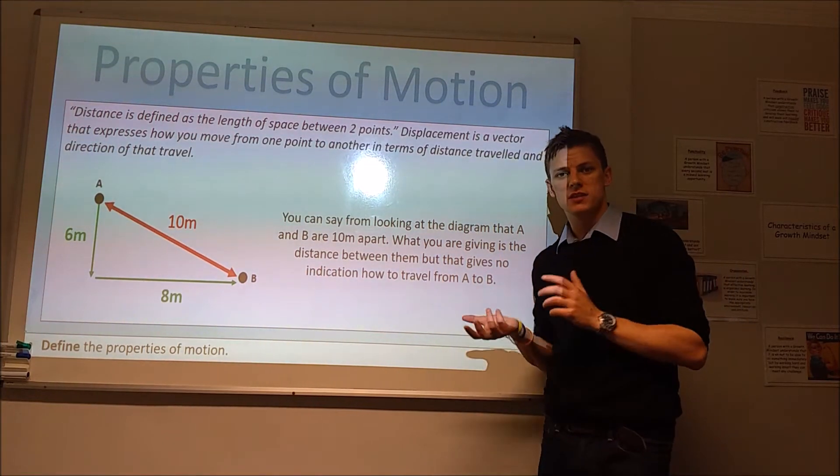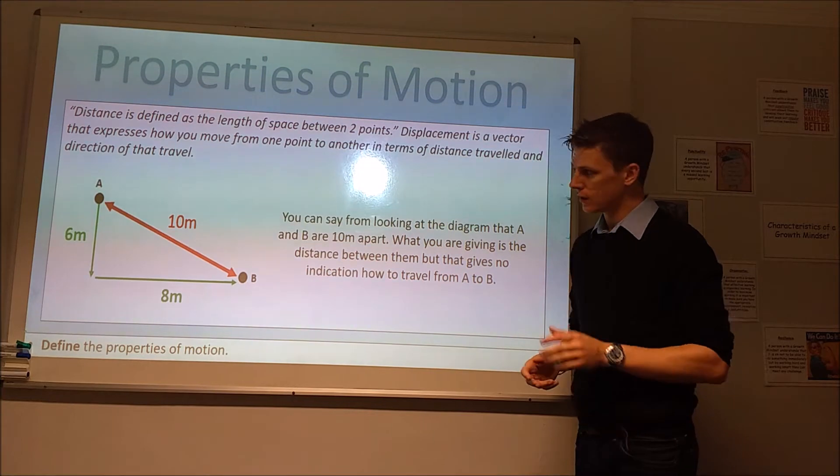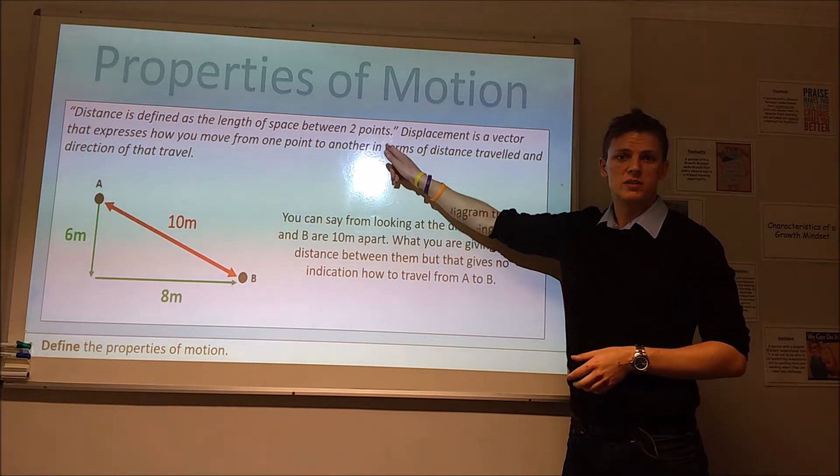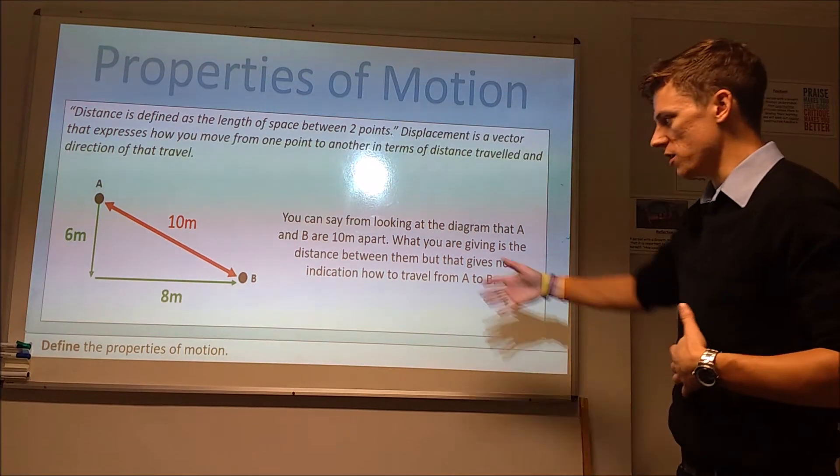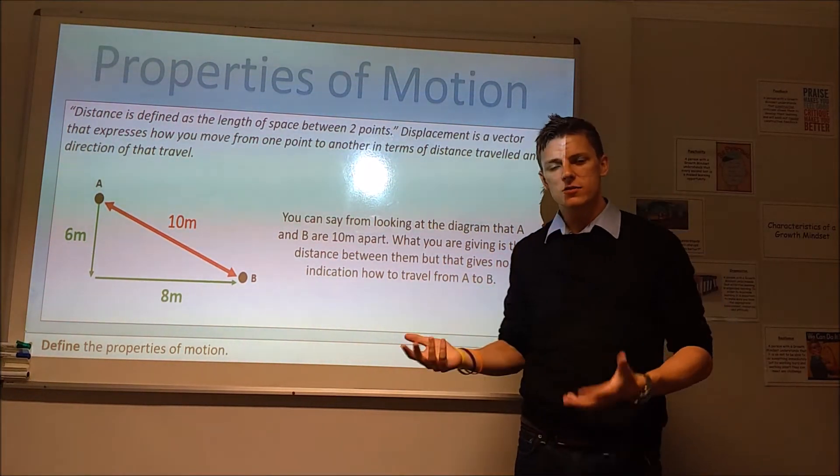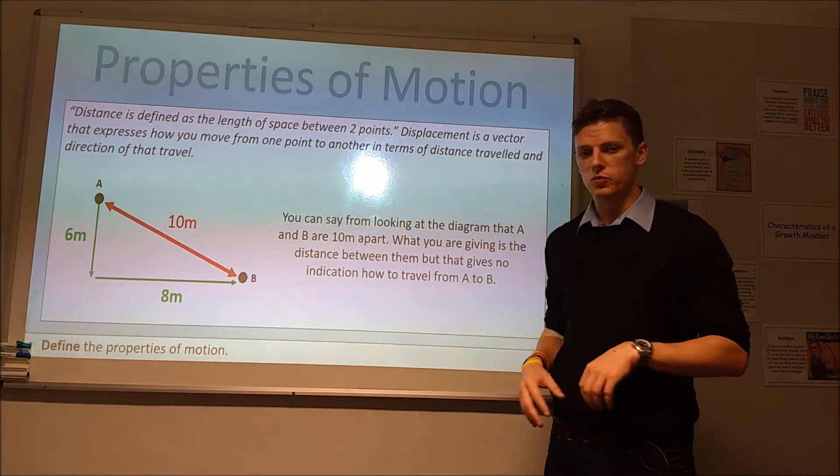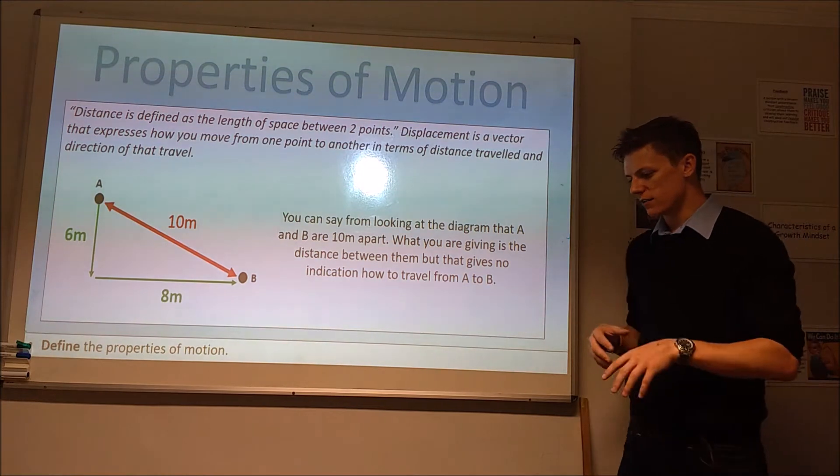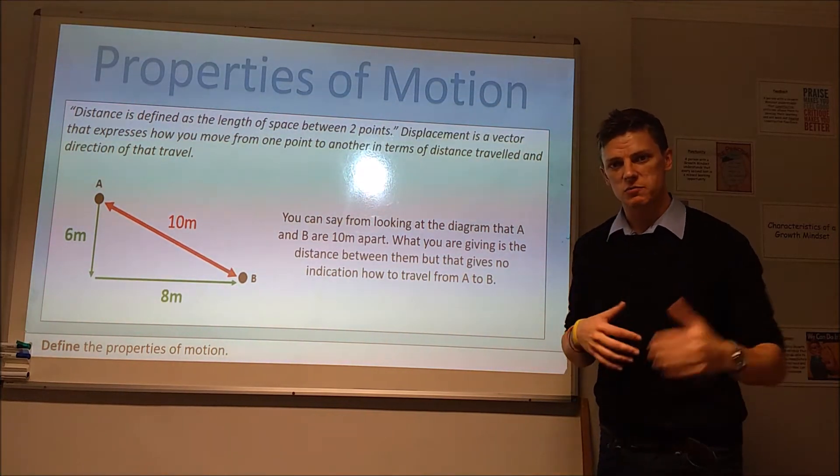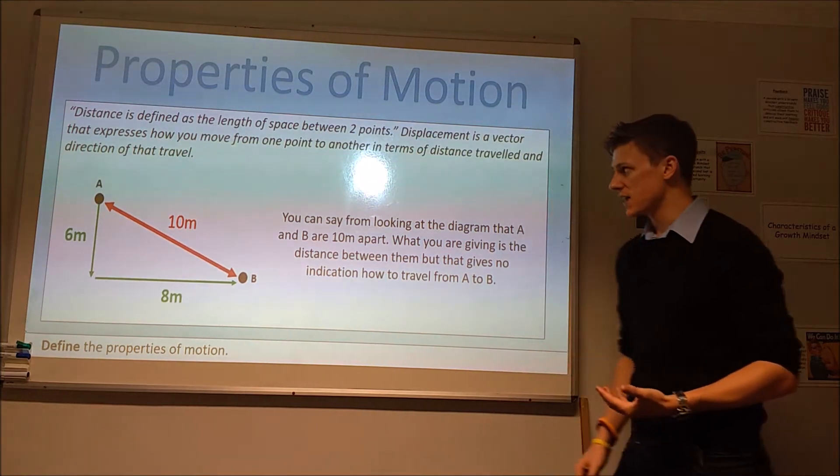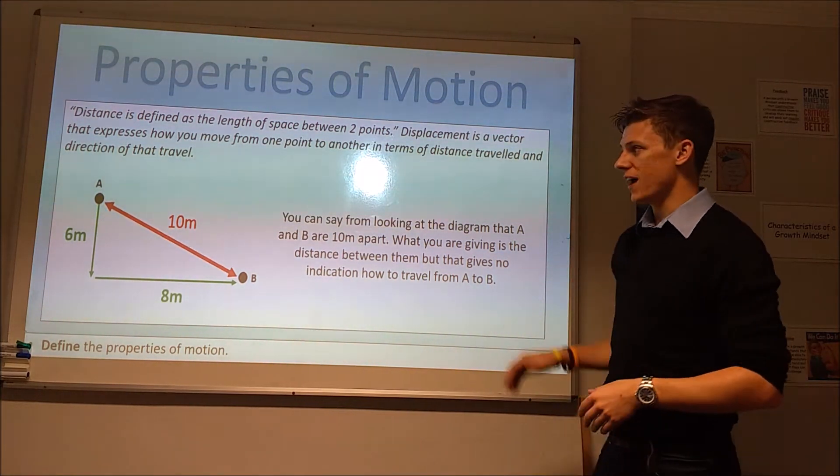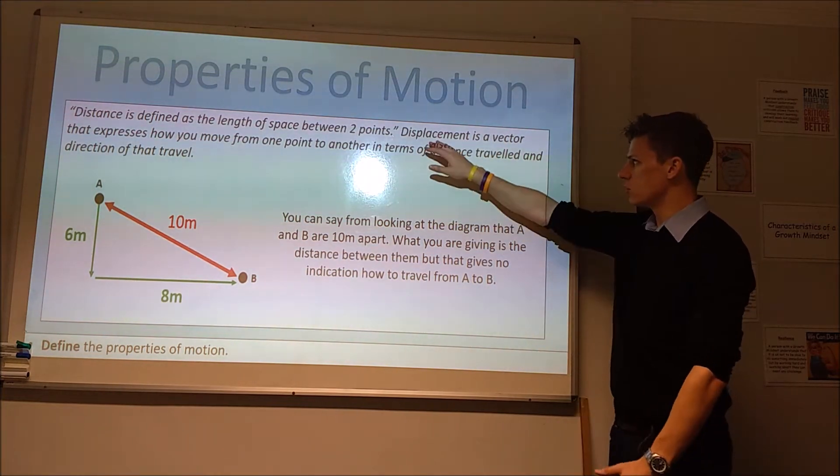Let's look at our first property that an object can have, our real first property of motion. You should have come across distance before. Distance is defined as the length of space between two points. For instance, I might be one meter away from this board. That's me giving the distance there. With saying that, I haven't given you any indication of my position relative to the board. I told you how far away I am, but you don't know in terms of what direction that is. What I've given you there is called a scalar. When I just give you the size of something but no indication of direction, distance is a scalar.